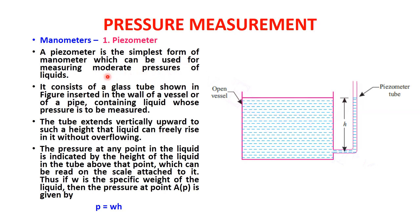A piezometer is the simplest form of manometer, used for measuring moderate pressures of a liquid. It consists of a glass tube inserted in the wall of a vessel or pipe containing the liquid whose pressure is to be measured. The tube extends vertically upwards to such a height that the liquid can freely rise in it without overflowing.